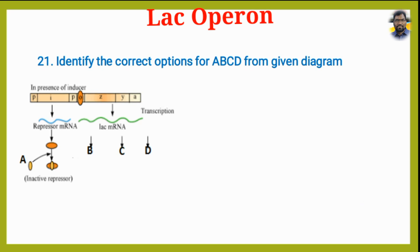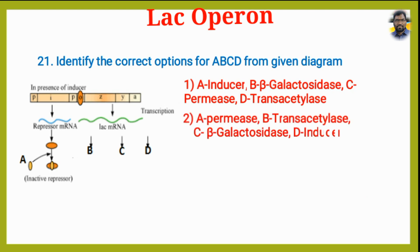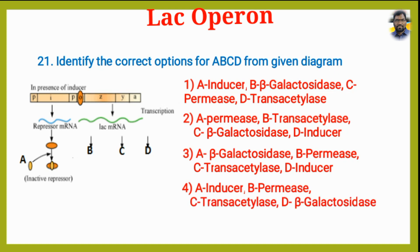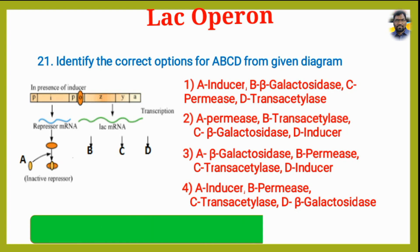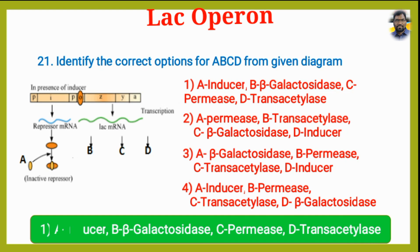Identify the correct options for A, B, C, D from the given diagram. Option 1: A=Inducer, B=Beta-galactosidase, C=Permease, D=Transacetylase. Option 2: A=Permease, B=Transacetylase, C=Beta-galactosidase, D=Inducer. Option 3: A=Beta-galactosidase, B=Permease, C=Transacetylase, D=Inducer. Option 4: A=Inducer, B=Permease, C=Transacetylase, D=Beta-galactosidase. The answer is Option 1: A=Inducer, B=Beta-galactosidase, C=Permease, D=Transacetylase.